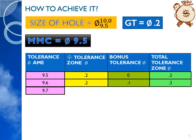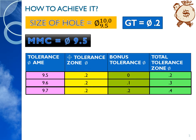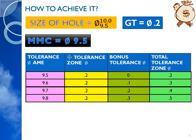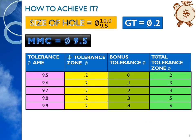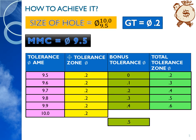If the part is produced at 9.7, the position tolerance remains 0.2, and the bonus tolerance will be 9.7 minus 9.5, giving 0.2. The total tolerance — position tolerance plus bonus tolerance — equals 0.4. If the part is produced at 9.8, the position tolerance is 0.2 and bonus tolerance is 0.3 (9.8 minus 9.5), giving a total tolerance of 0.5. Similarly, when the part is produced at 9.9 the total tolerance is 0.6, and when produced at 10.0 the total tolerance available is 0.7.